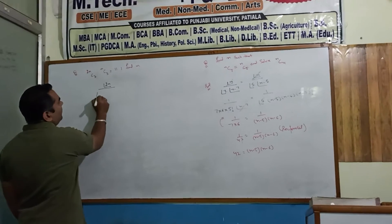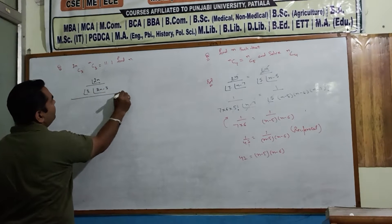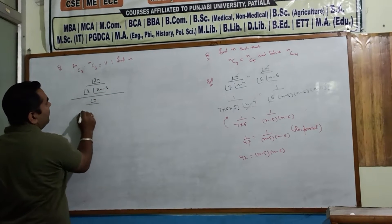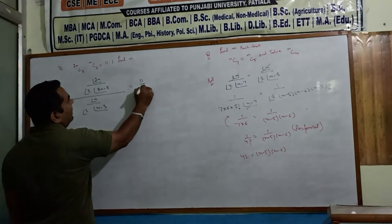2N factorial over 3 factorial times 2N minus 3, over N factorial times 3 factorial times N minus 3, equals to 11 by 1.